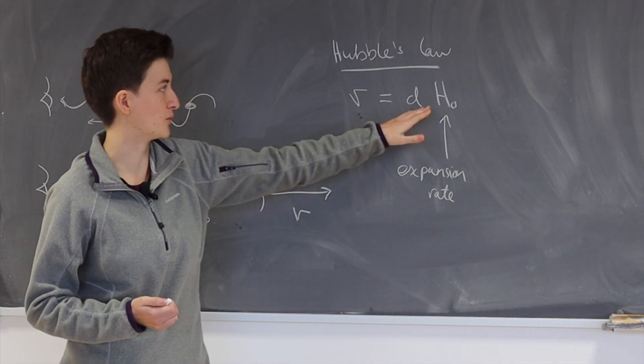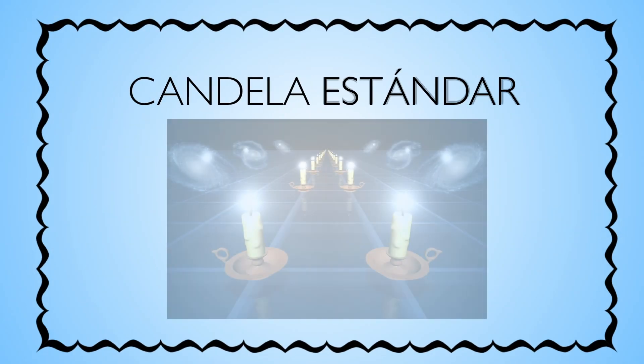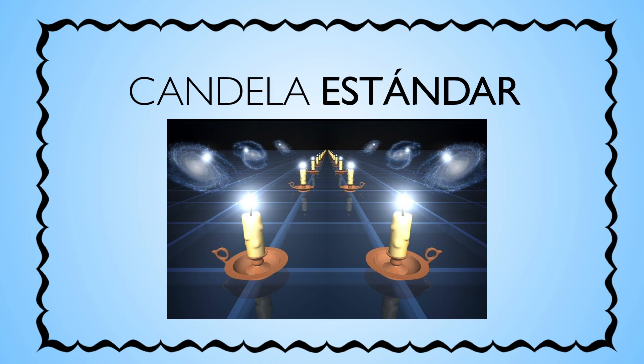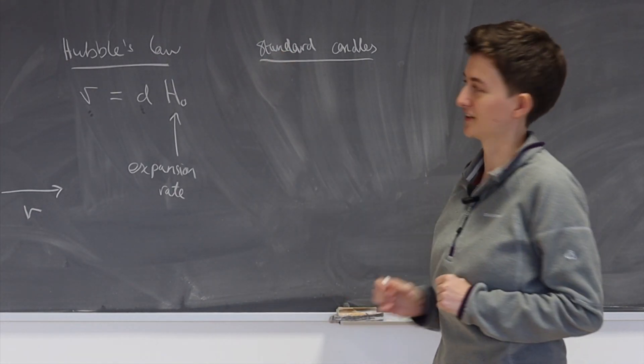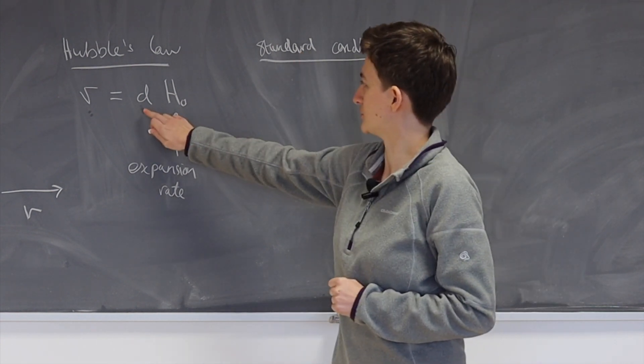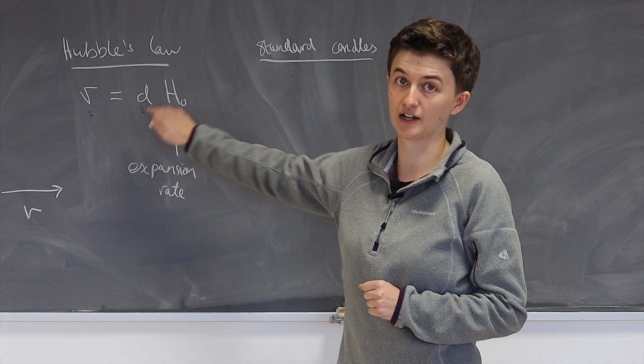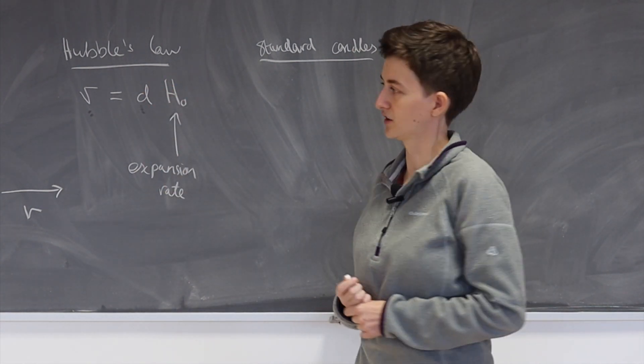So let me now describe one particular way that we measure H0, through a technique called standard candles. So the word standard here is key, and this will come back when I talk about standard sirens in a moment. The word standard really means that we're able to measure this distance accurately. We're able to basically know how far away the particular object is.